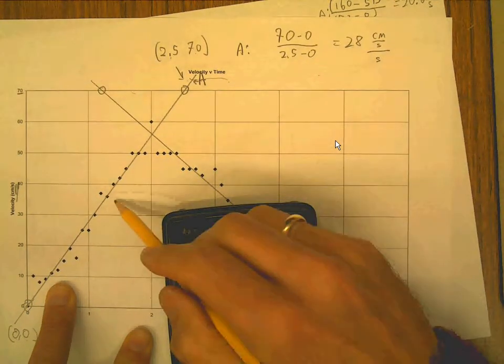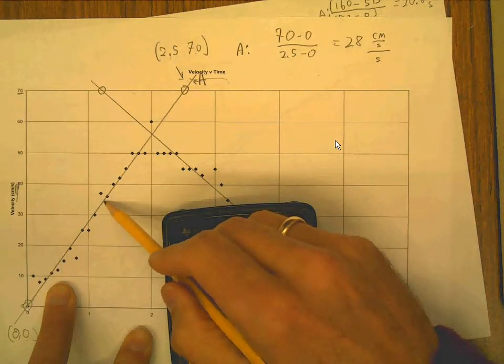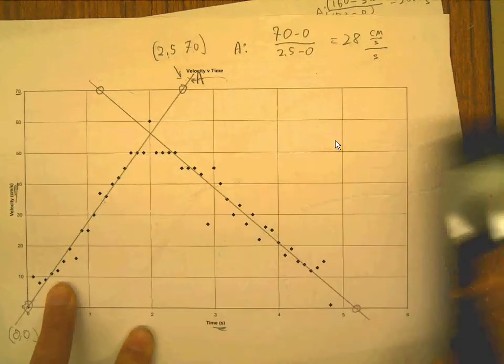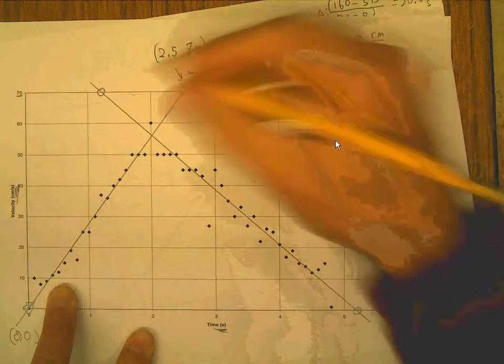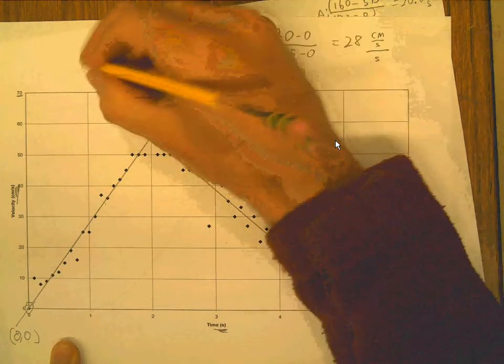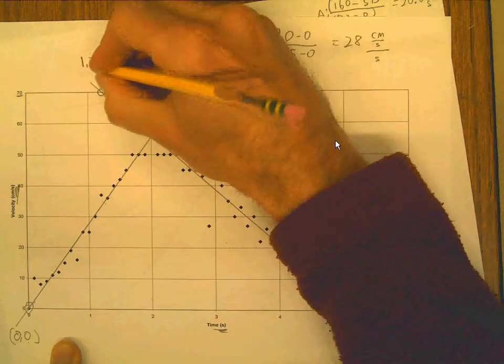Okay. And this slope here, by the way, looks a lot steeper than this slope here, but we're going to check that out, okay? Now this line right here, I'm going to read these coordinates here. It looks like it's over 1.2 and up 70.